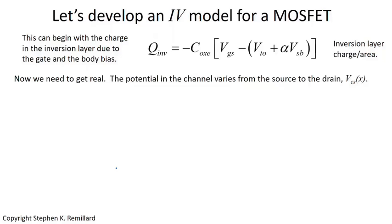We begin with the inversion charge derived earlier, which is a function of the oxide capacitance, the gate-source voltage, the threshold voltage, and the body effect. That expression made one big simplifying assumption: that everywhere in the channel, we're at the same potential as the source. That's not really true, so we're going to have to make some changes to it.